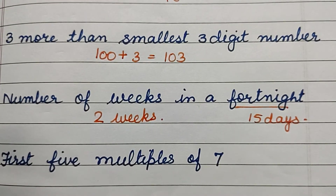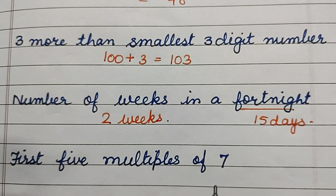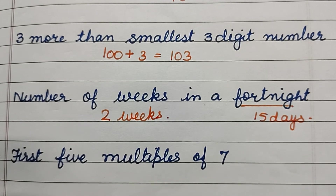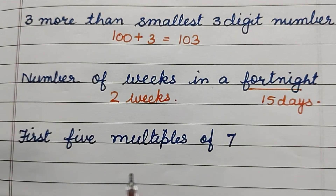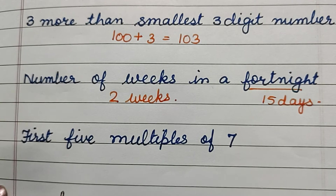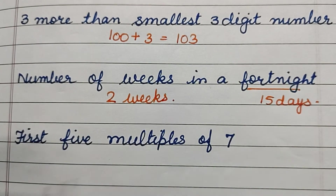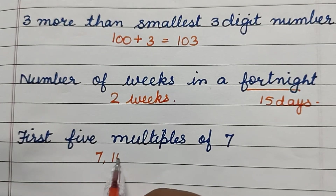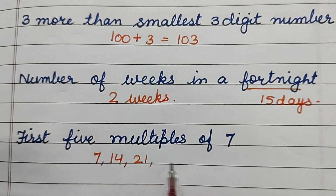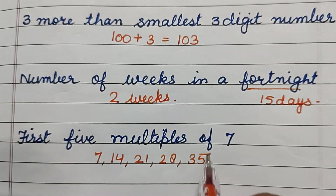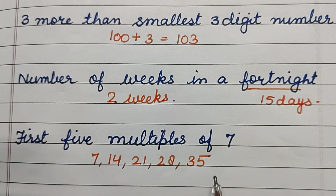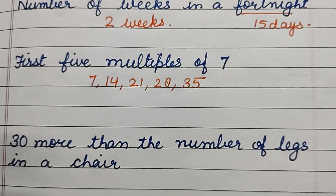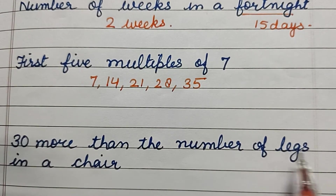First 5 multiples of 7 — that means we have to write the table of 7 up to 5, but only the numbers we get after multiplying 7. So: 7, 14, 21, 28, and 35. These are the first 5 multiples of 7.